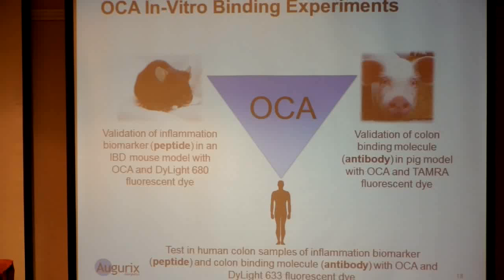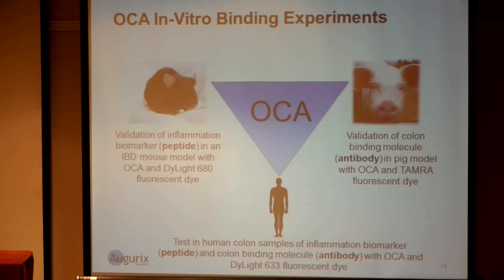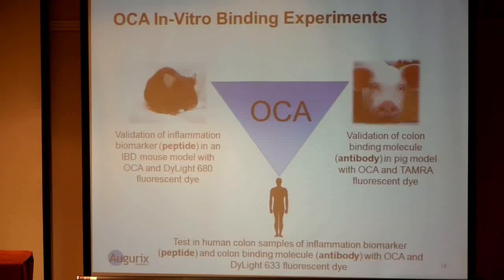Then we wanted to demonstrate that we can bind a variety of molecules onto our carrier. These are the binding experiments. One of them is in a mouse model with a peptide specific for inflammation in mice, using the dye Dy-Light 618. We also did some experiments using the pig colon, where we wanted to prove we could attach antibodies, which are much larger molecules. And in the human context, we used different fluorescent dyes on section samples from colorectal cancer resections.